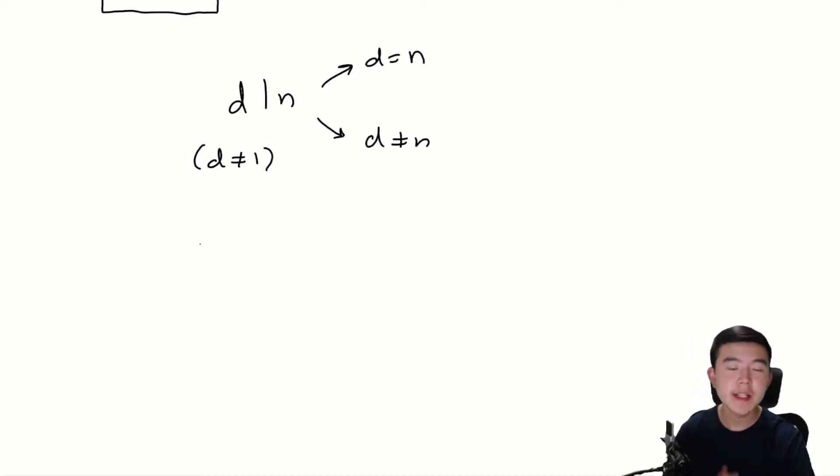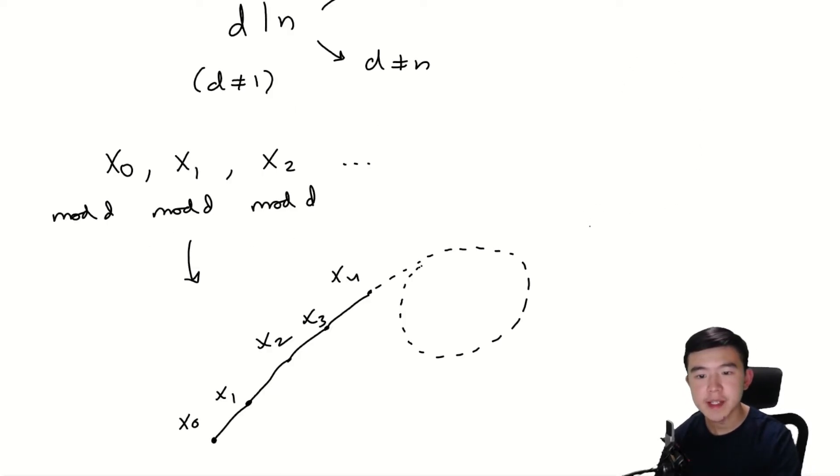So we have a value of d. Let's consider a new sequence, which is just the original sequence, but modded by d. And eventually, this sequence is going to cycle too, because it only has d unique values that the terms in the sequence can take on. It's kind of like the original sequence, but now there's only d unique values instead of n. So the maximum length of the cycle is at most d.